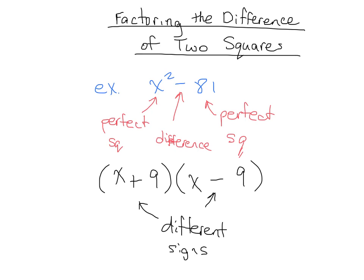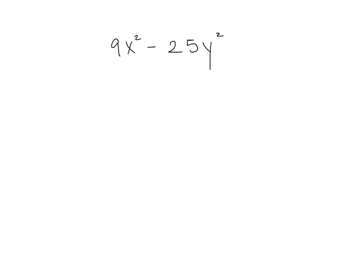But here's a slightly harder looking one. Same idea. It just looks harder. So on the left side, we have, again, a perfect square. 9 and also x squared. Together they are a perfect square. And we have a perfect square over here. So therefore, difference of two squares. First things first. Make sure your signs are different. And then square root of 9x squared is 3x. Square root of 25y squared is 5y. And we are done.